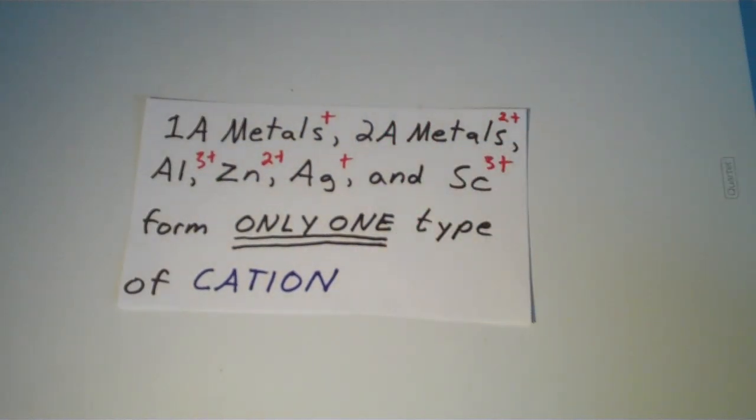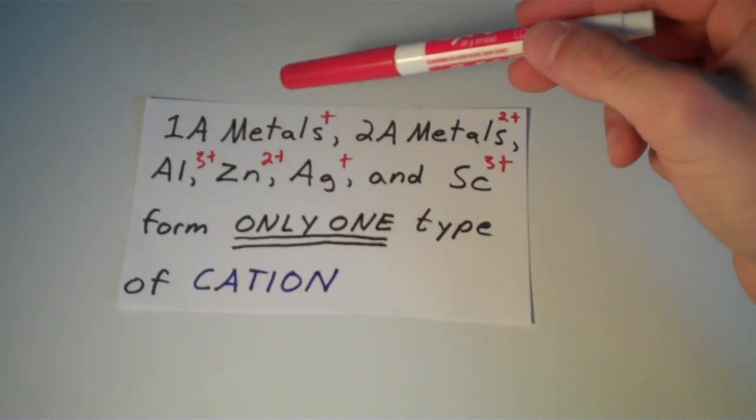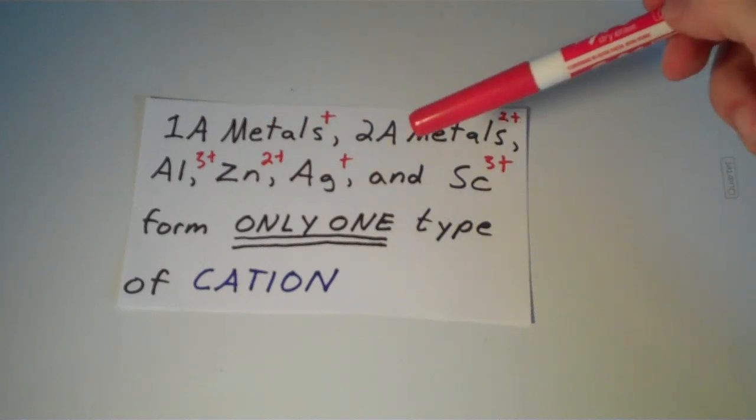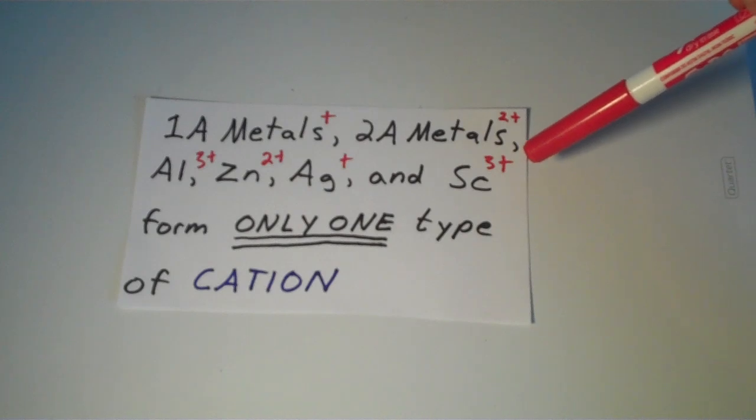Group 1A metals, group 2A metals, aluminum, zinc, silver, and scandium all form only one type of cation. Group 1A metals have a plus one charge, group 2A metals have a plus two charge, aluminum has a plus three charge, zinc has a plus two charge, silver has a plus one charge, and scandium has a plus three charge.